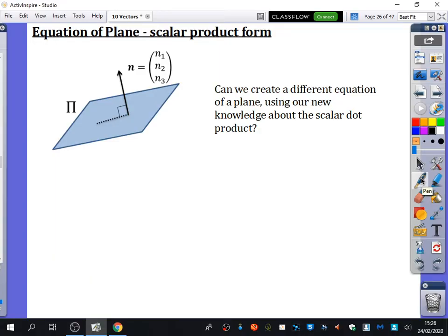Can we create a different equation of a plane using our new knowledge about the scalar dot product? Here is our plane. I'm going to say this is our origin. Here's a point on the plane that we already know about. This is a particular point on the plane, A.